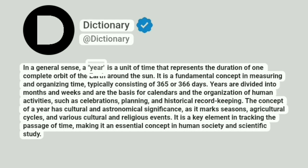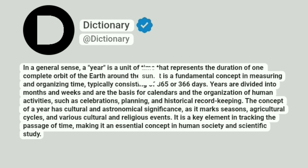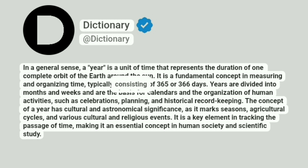In a general sense, a year is a unit of time that represents the duration of one complete orbit of the Earth around the Sun. It is a fundamental concept in measuring and organizing time, typically consisting of 365 or 366 days.